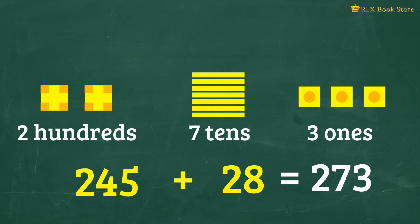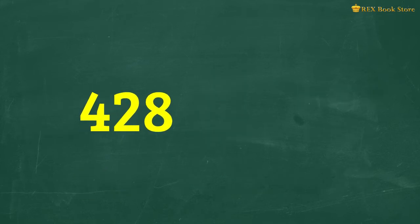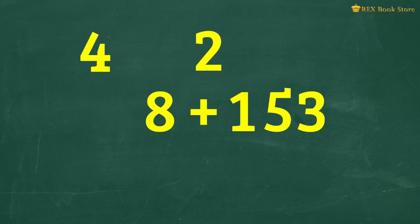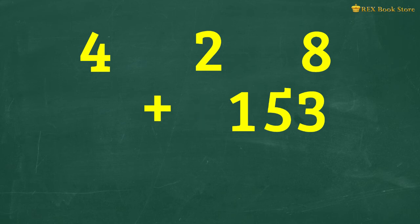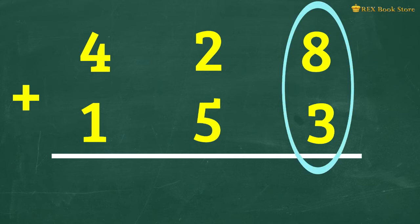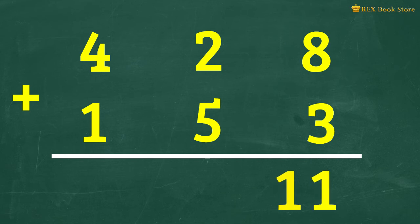This time, let's add 428 and 153 without the use of manipulatives. Align the hundreds, tens, and ones like so, and add beginning from the ones. 8 ones plus 3 ones equals 11 ones. Regroup this to become 1 tens and 1 one.